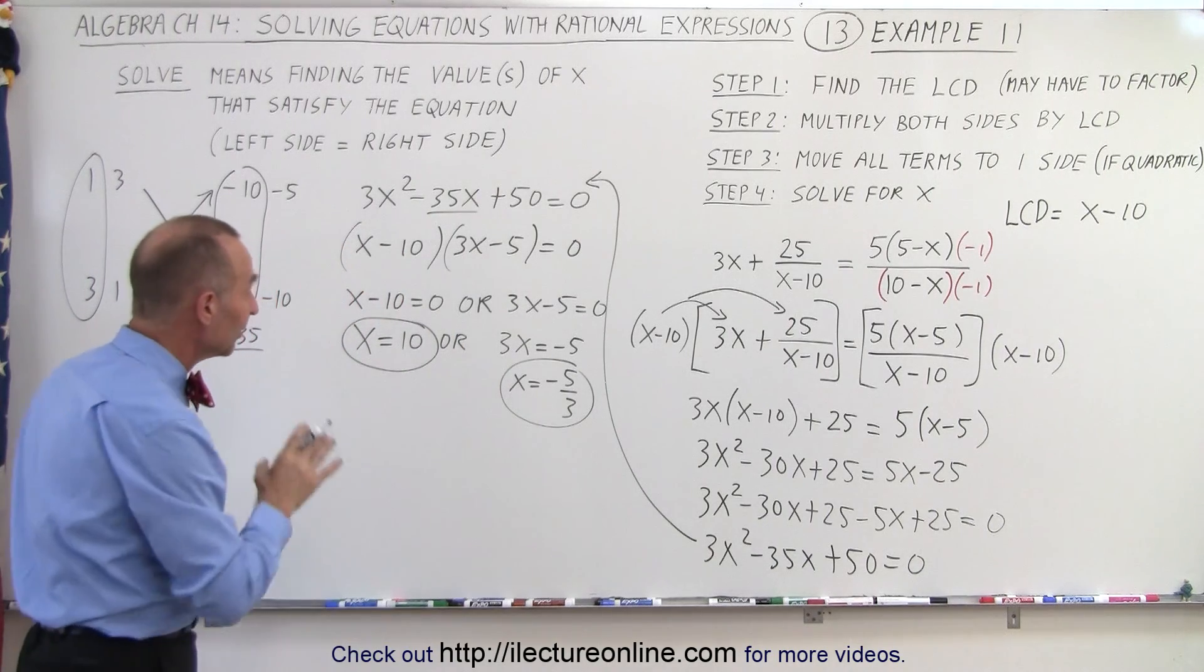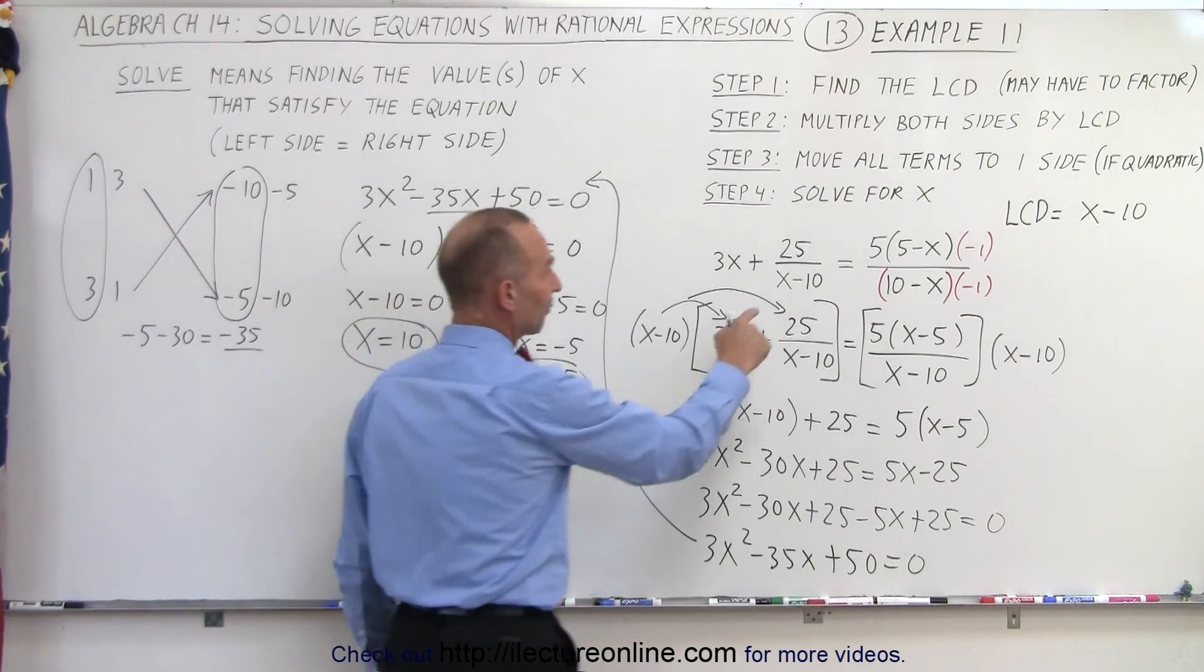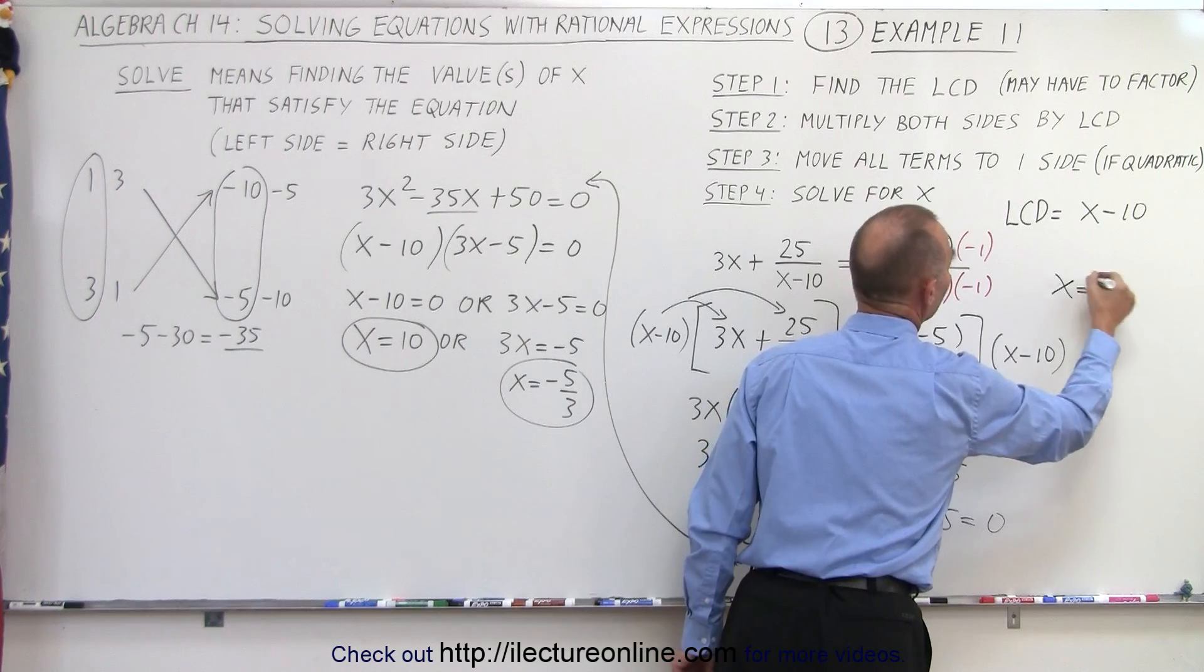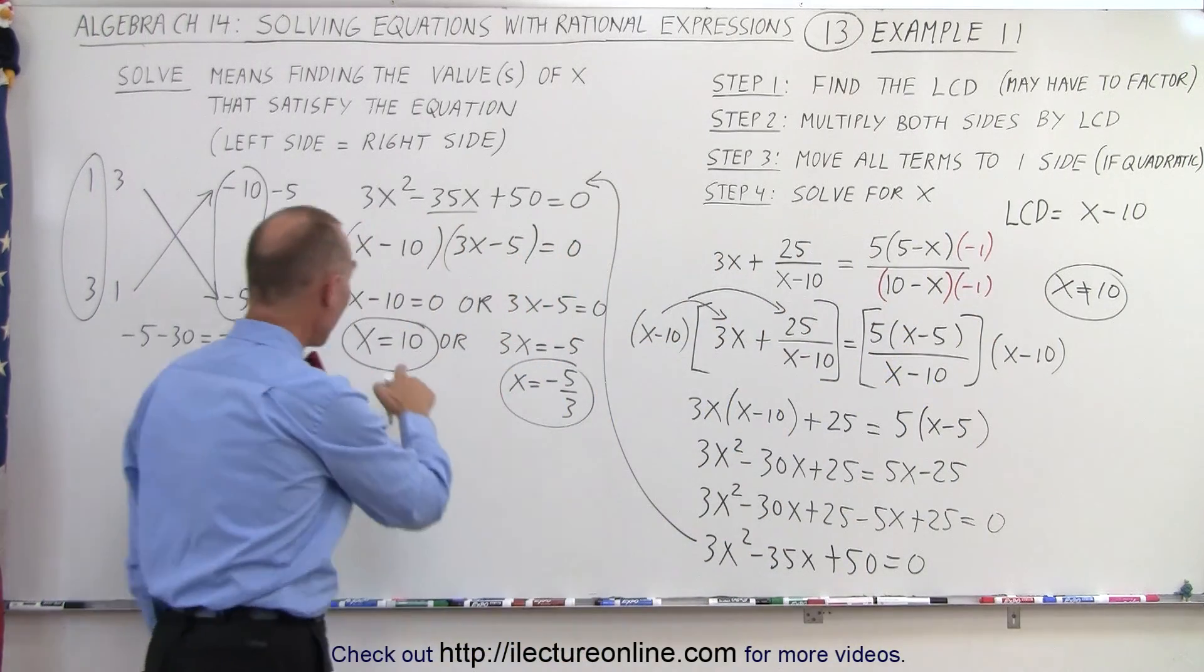which means that x is equal to negative 5 over 3. So these are the two possible solutions. Now, we need to verify that none of these violate our rules. In other words, since we have the denominator of x minus 10,